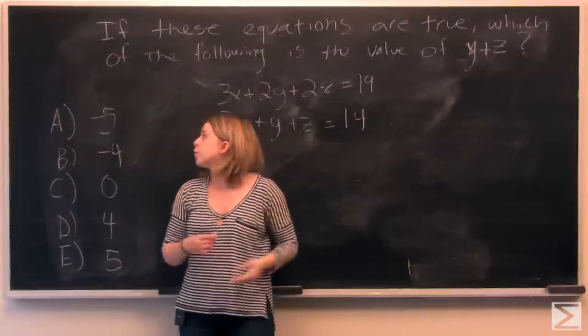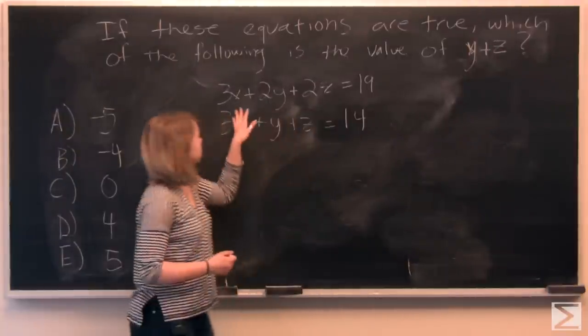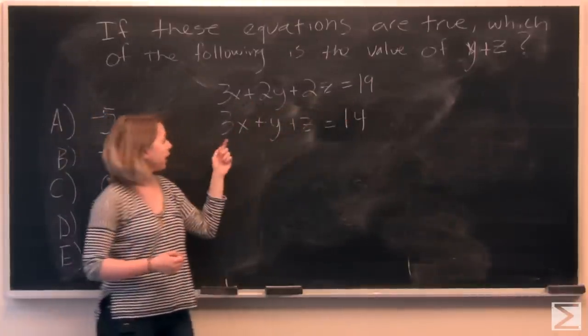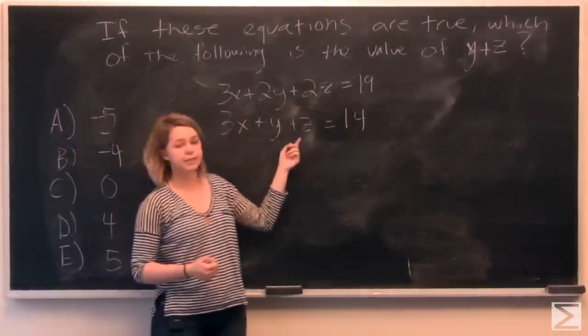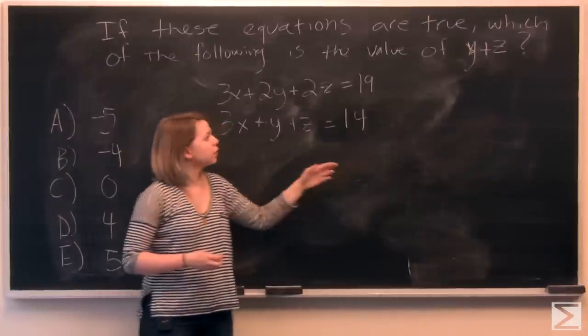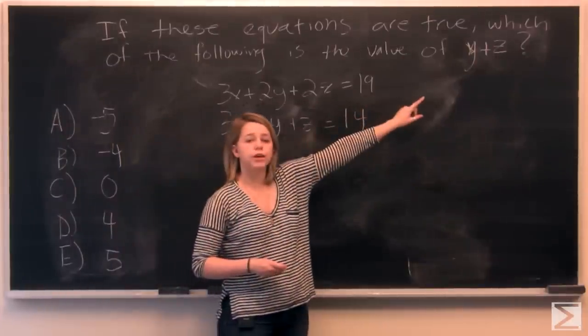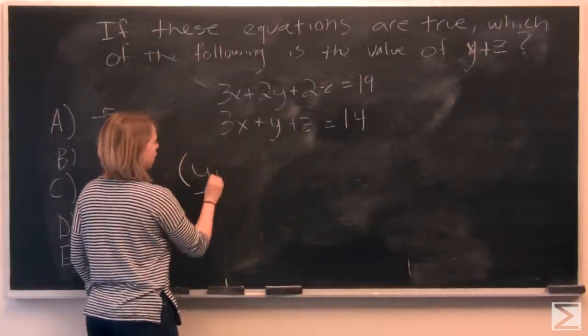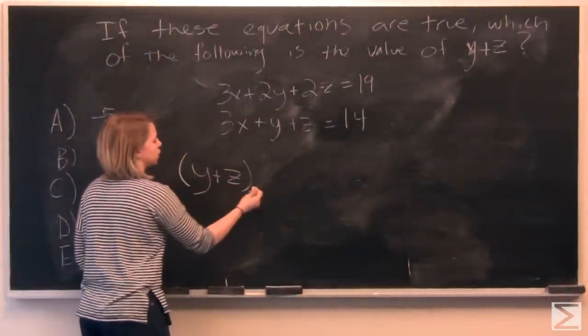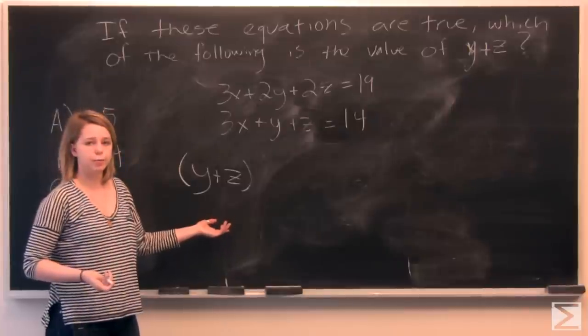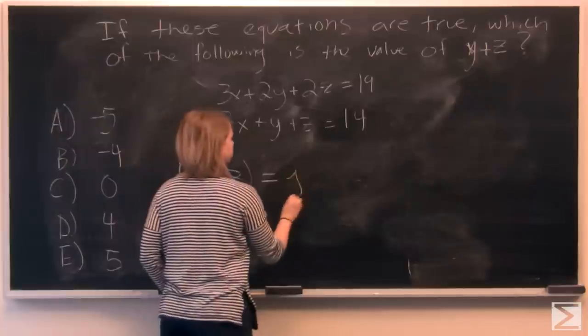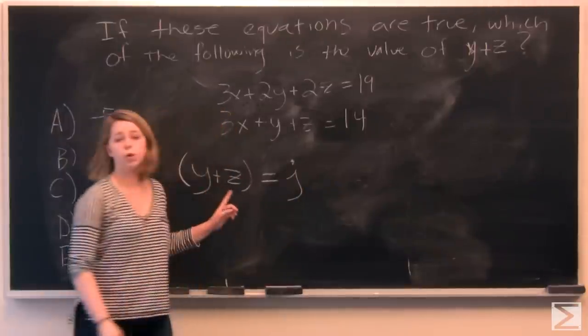So in our second problem, we are given two equations. 3x plus 2y plus 2z equals 19. And 3x plus y plus z equals 14. And we are looking for the value of y plus z together. So we're looking for y plus z. Two variables aren't very easy to work with. So let's assign a different variable, j, to y plus z.